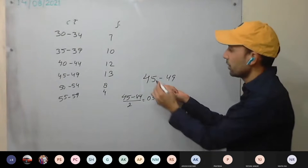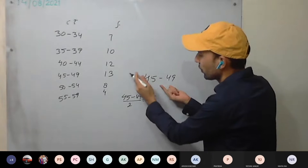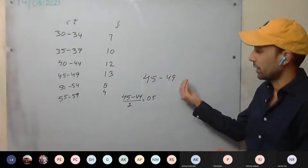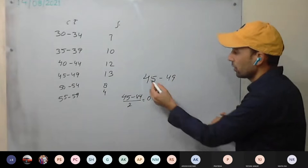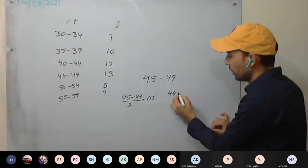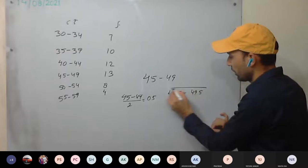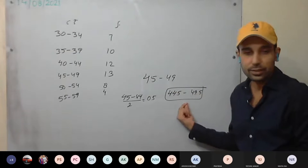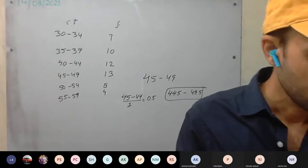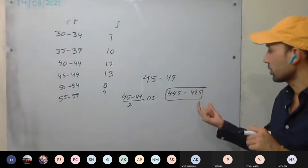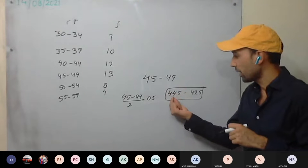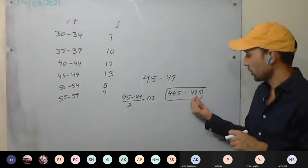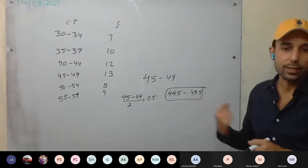We subtract 0.5 from the lower limit and add 0.5 to the upper limit. So the class interval becomes 44.5 to 49.5. These are the actual class limits — 44.5 is the actual lower limit and 49.5 is the actual upper limit of the fourth class.